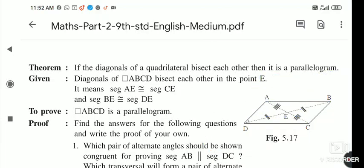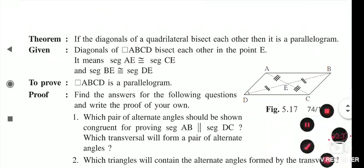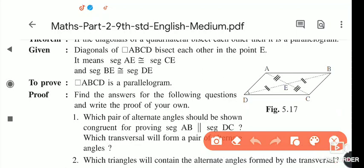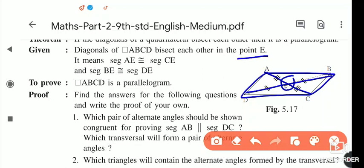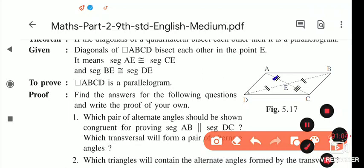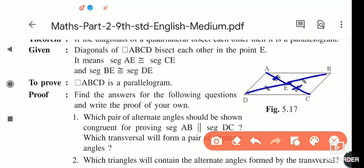You have to prove this yourself; some steps are given and you have to solve it. In quadrilateral ABCD, the diagonals AC and DB intersect each other at point E. That means AE equals EC and DE equals EB.